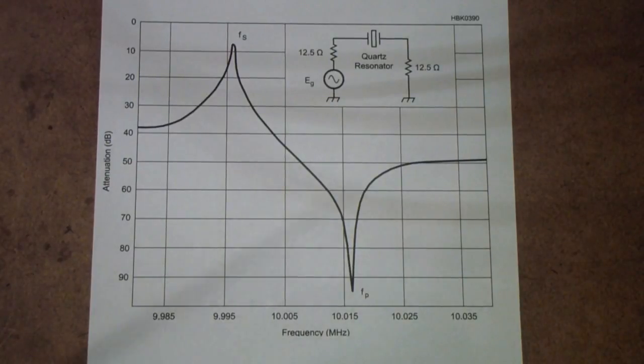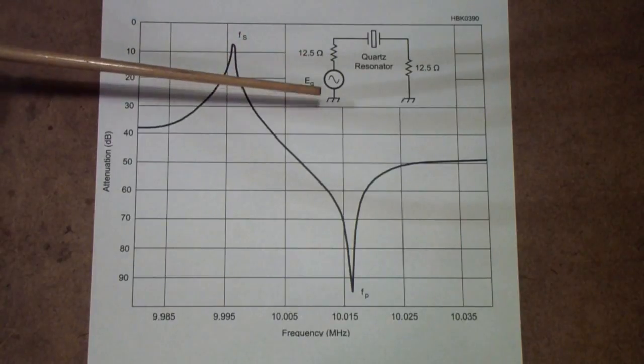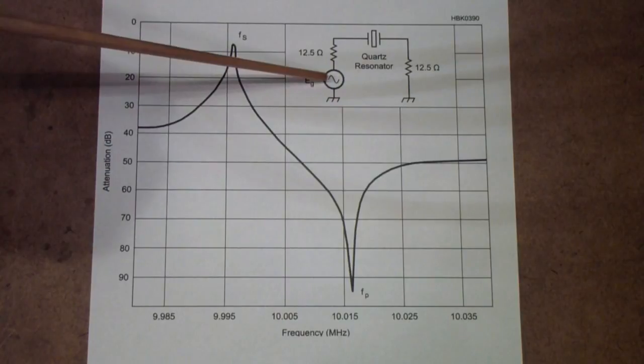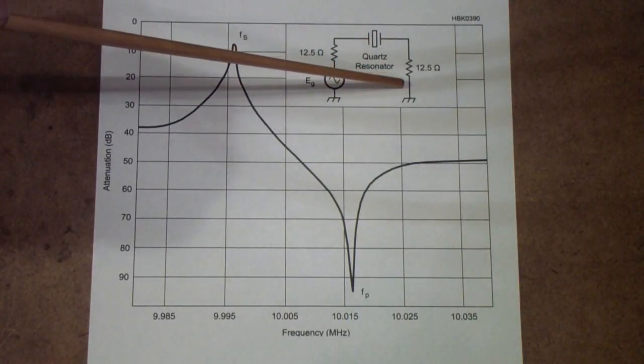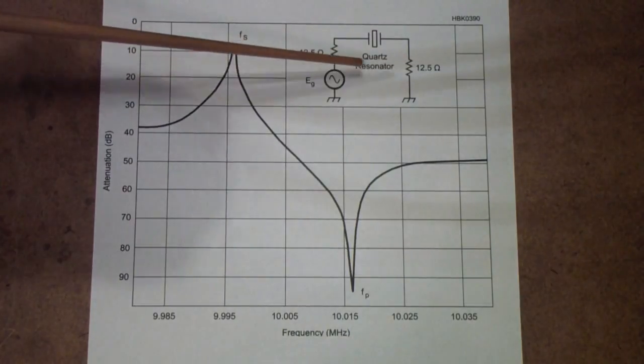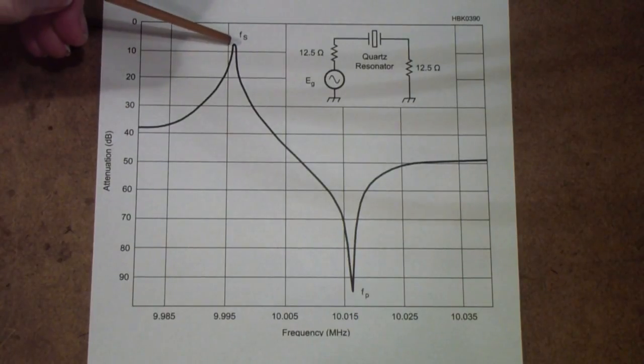Here is a typical response curve for a crystal. In this case, this is a 10 megahertz crystal that is being used with a generator that has about a 12.5 ohm internal resistance. And it's operated into a load of approximately the same amount. Generally, this is, you want to keep these balanced. As you see, at the series resonant frequency, there is a peak. In other words, very little attenuation.